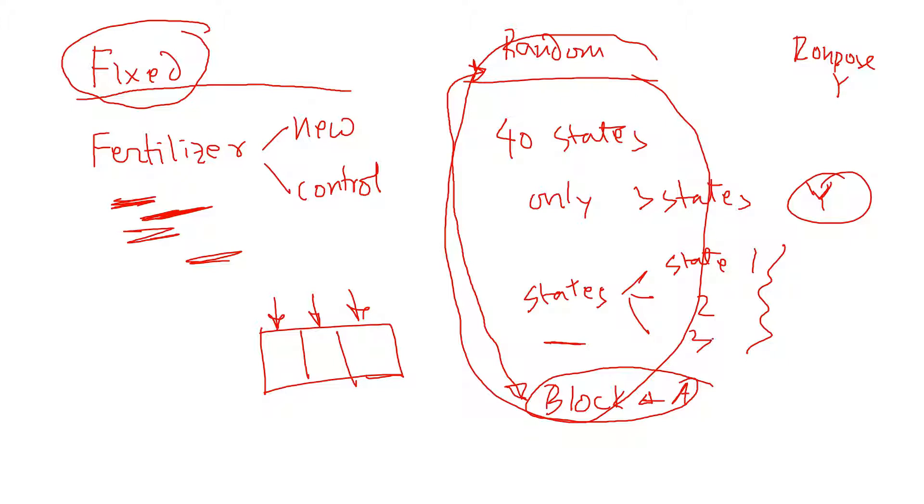If they are fixed, then they become a fixed factor. So generally, fixed factor is our interest, random factor is just to widen our conclusion for a wide range of things.